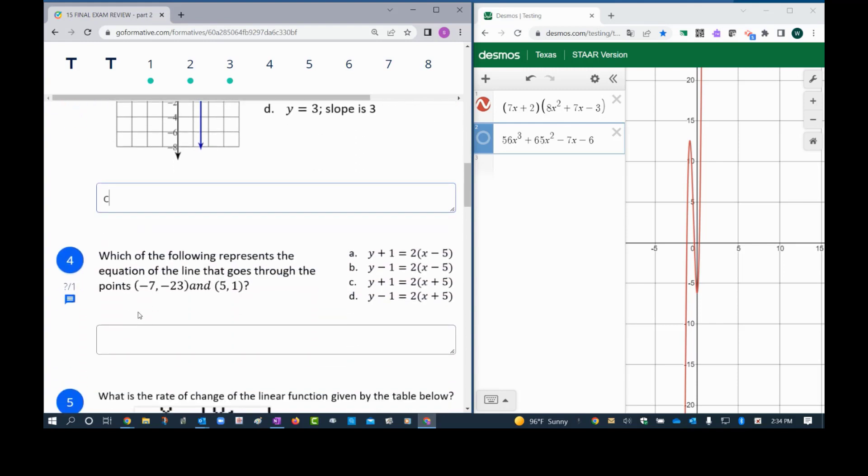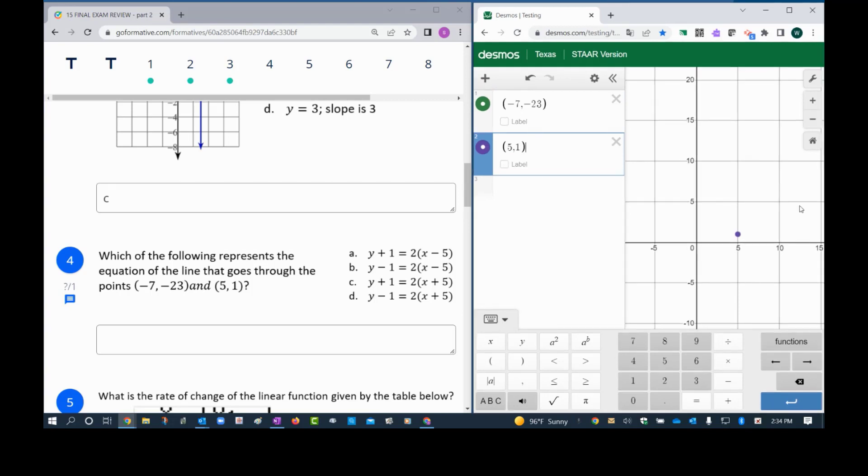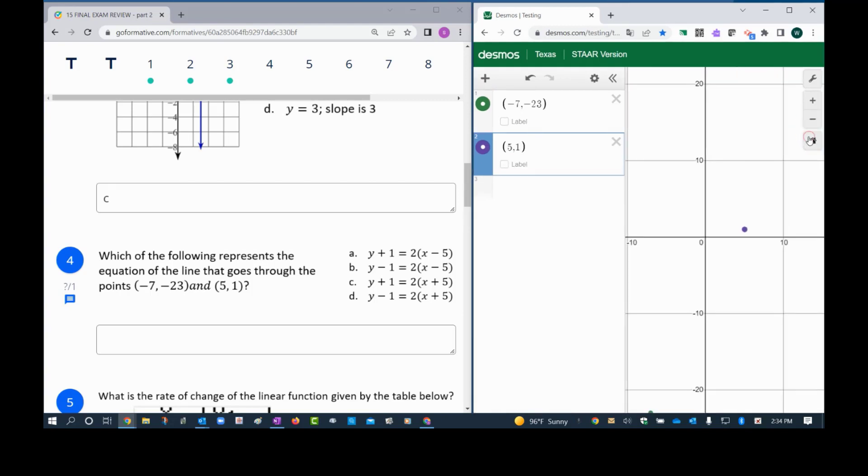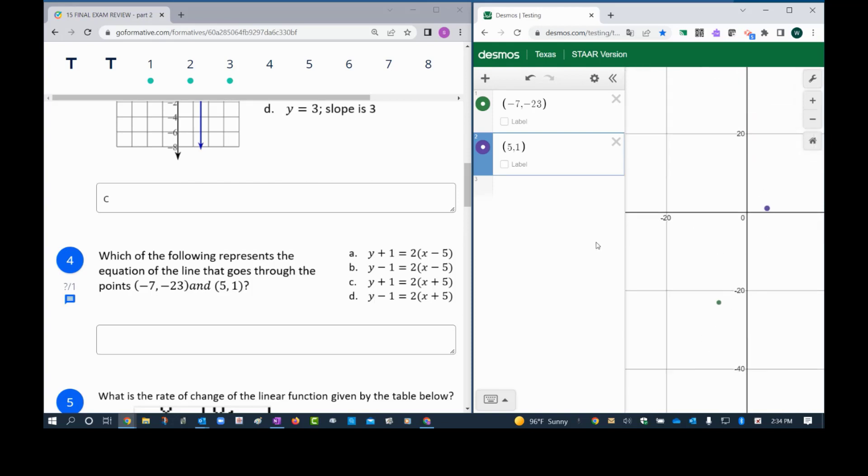Next one is like the zombie question where you make two points. So negative 7, negative 23. Basically you want a line that passes through those two points, so right there we draw our two zombies. And if you cannot see the zombies, press the little house. There we go, we can see it.